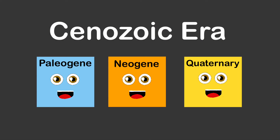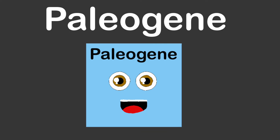We're the three time periods in the Cenozoic Era, the current era in the geological timeline. Cenozoic means 'new life,' as you can see. Let's learn about these time periods.